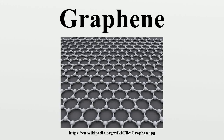Graphene is an allotrope of carbon in the form of a two-dimensional, atomic-scale, hexagonal lattice in which one atom forms each vertex. It is the basic structural element of other allotropes, including graphite, charcoal, carbon nanotubes and fullerenes.